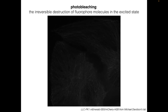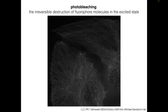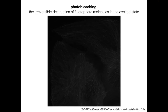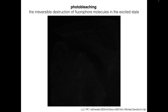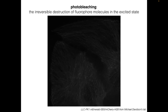Photobleaching is a problem for many types of experiments. If you are trying to measure fluorescence intensity, this is clearly a major source of error, because the intensity change we see in this example is due to photobleaching, not to any underlying biological phenomenon. But even if you're not measuring intensity, photobleaching can complicate your experiments — at some point in the time lapse, we can no longer get any useful information from the images because we've lost too much fluorophore.